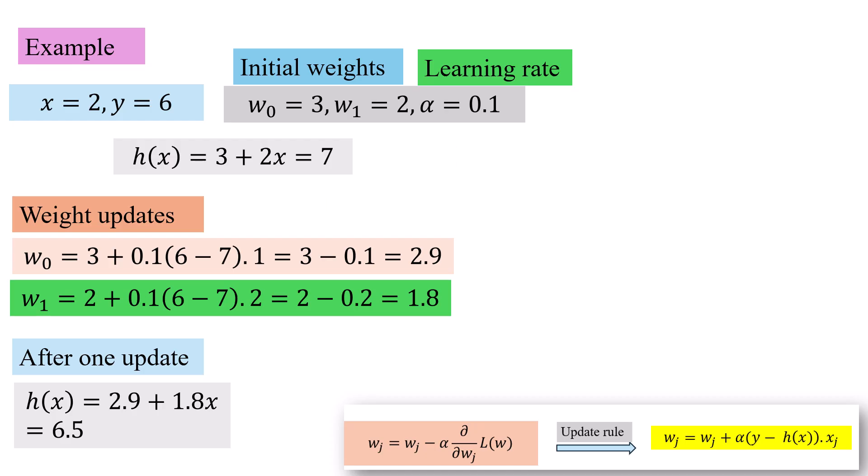Now, we take a very simple example before we end the video. Our values are x equal to 2, y equal to 6, which means we are talking only in terms of two dimensions because our x0 is 1. The other x is one value here and y is 6. We take two weights w0 is 3 and w1 is 2. These are the initial weights, random values we have just selected, and the learning rate we are choosing as 0.1. The h(x) value using these w0 equal to 3 and w1 equal to 2 is 3 plus 2x, which equals 7. This is the initial h(x) we get.